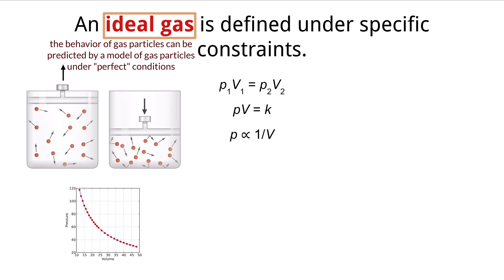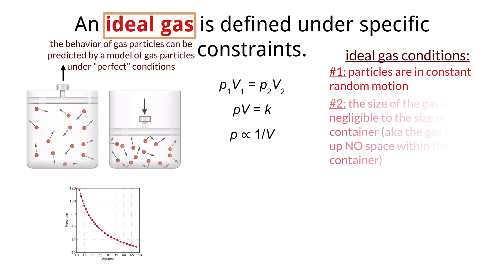This theoretical, not real gas, is defined by the following conditions. One: The particles within an ideal gas are in constant, random motion. Two: The size of each gas particle is negligible to the size of the volume of the container that they occupy, meaning that the gas is considered to take up basically no volume, which leaves the container and the remainder of the volume to be open space, in which the extremely small particles can move.